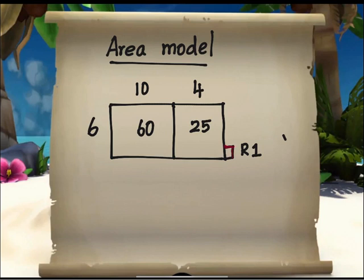And this unit square, which is attached to the two rectangles, is a remainder. This is the area model for the problem 85 divided by 6.